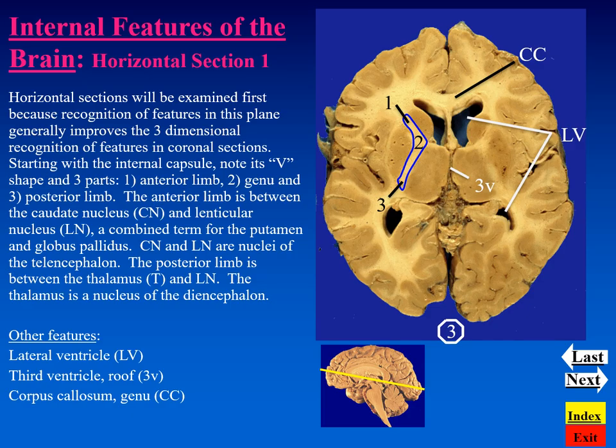Medial to the anterior limb, we can see a caudate nucleus. And lateral to it, there's a structure known as the lenticular nucleus. These are two new gray matter masses that are part of the telencephalon. Medial to the posterior limb is the thalamus, a component of the diencephalon. Lateral to the posterior limb, of course, is the lenticular nucleus.